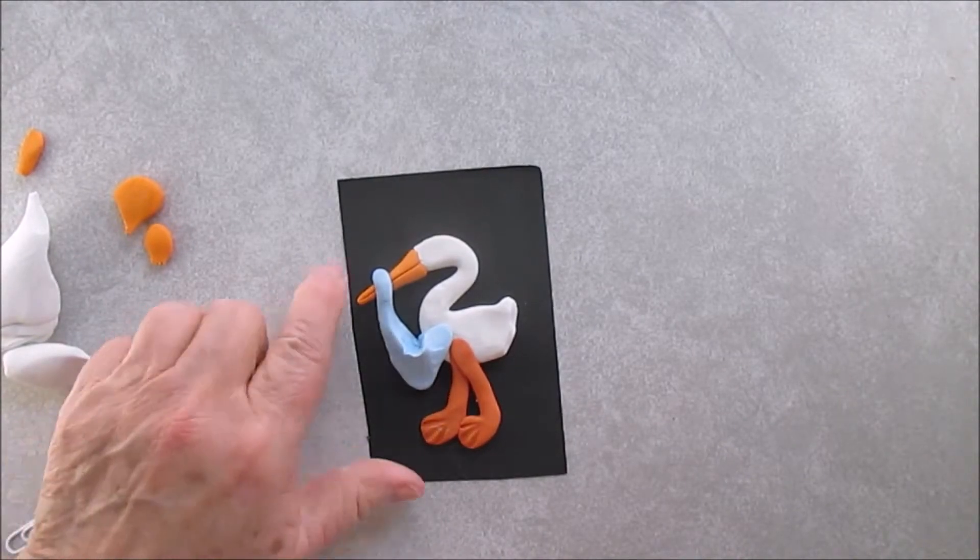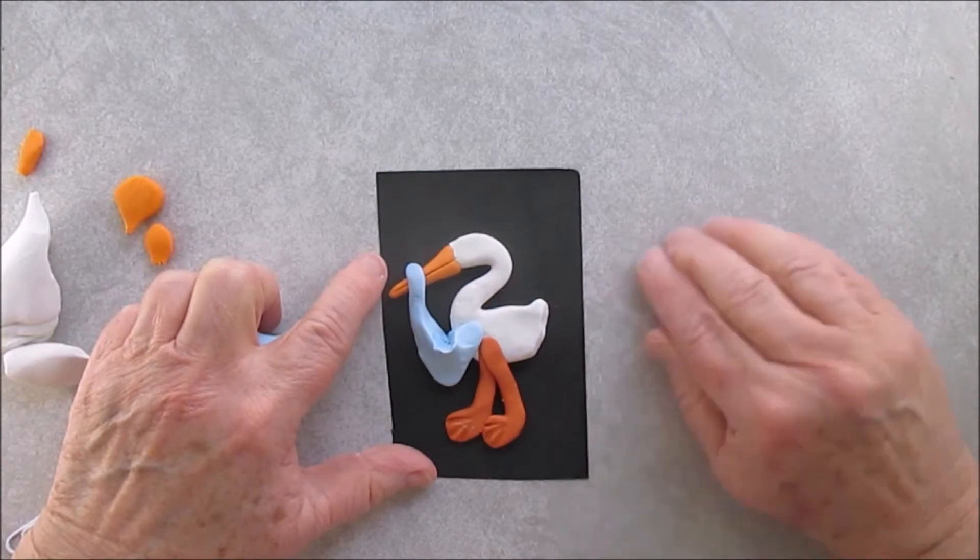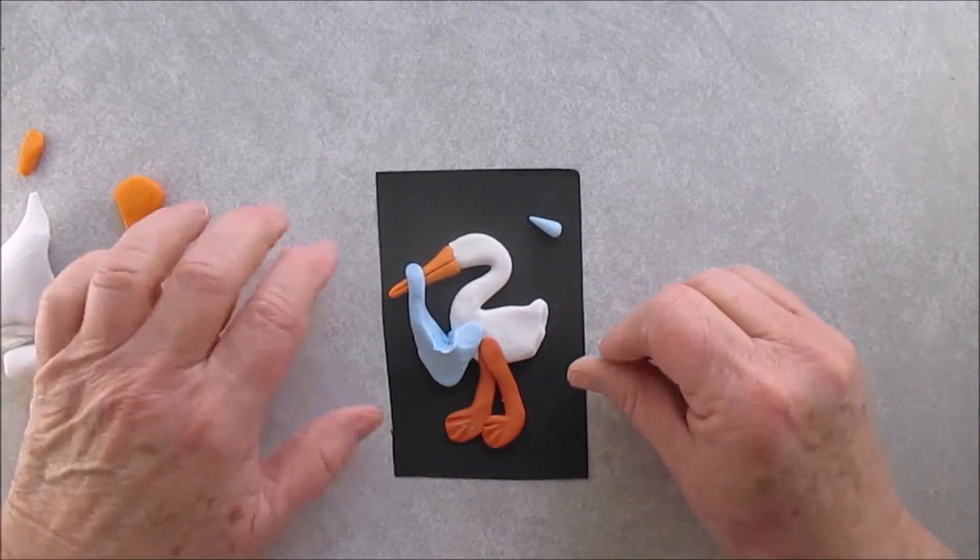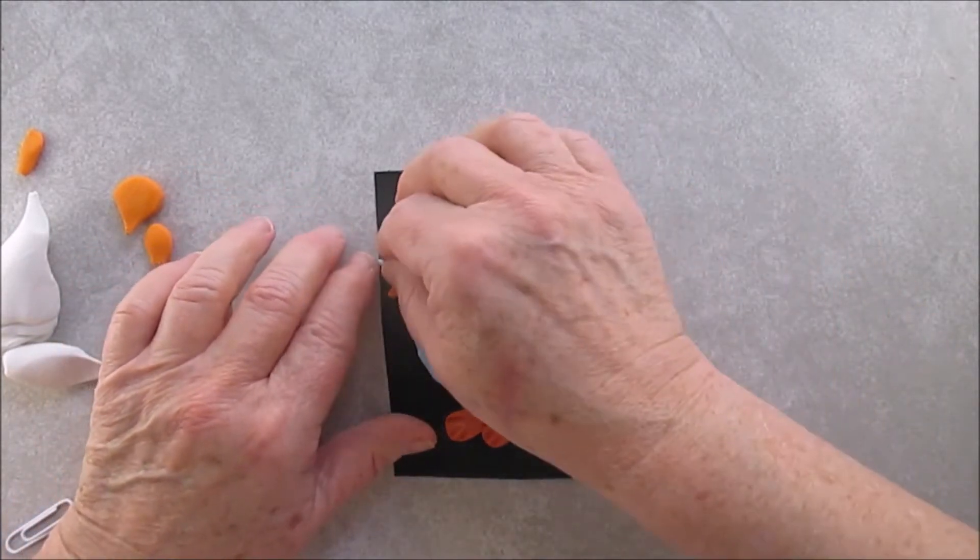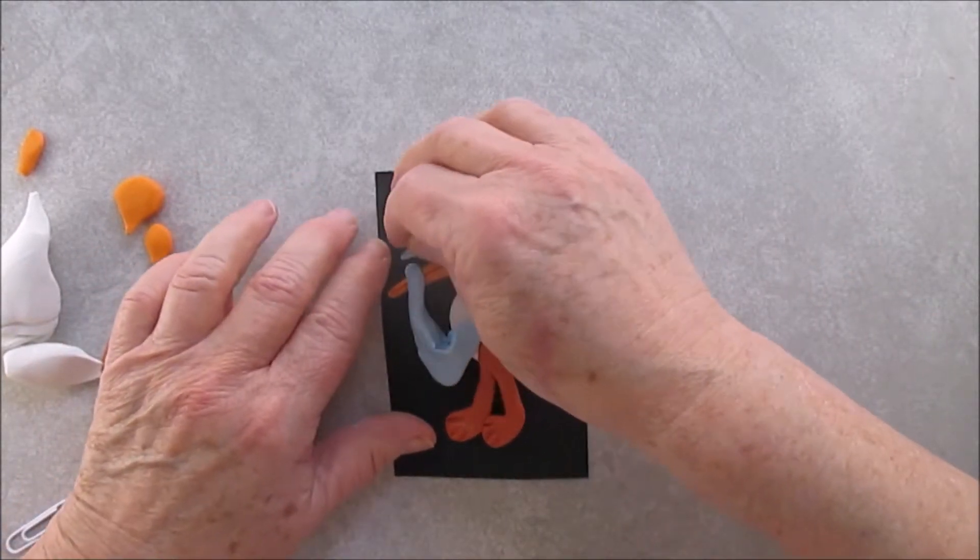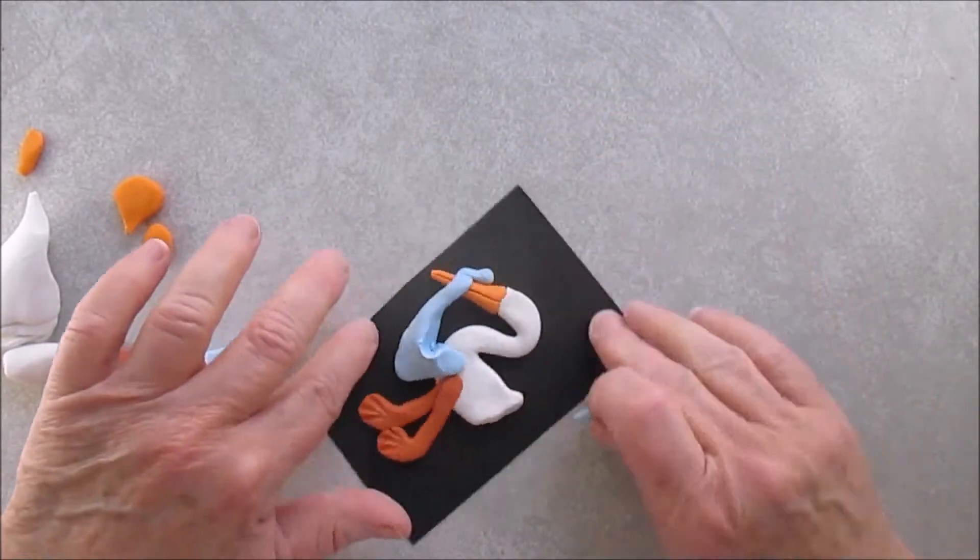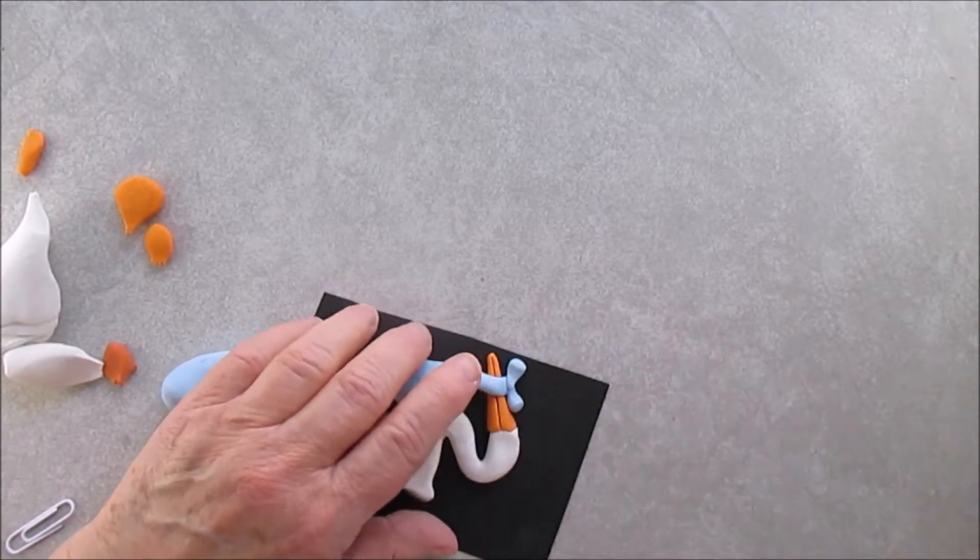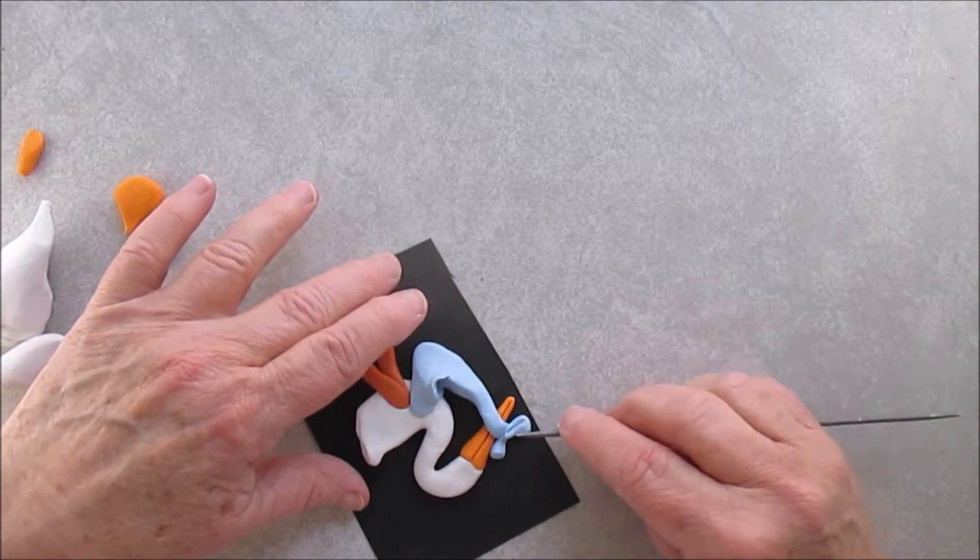And I made the blanket just very simple. I'm going to add a bow at the top. Just the standard way we always make the bows.